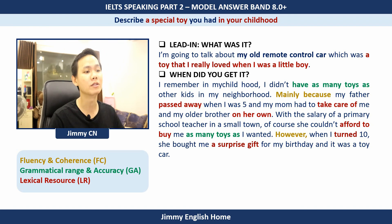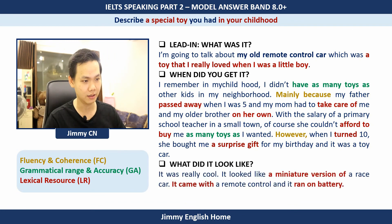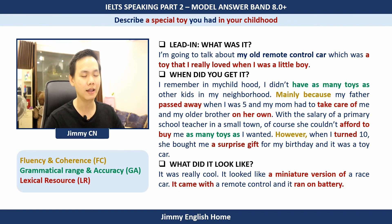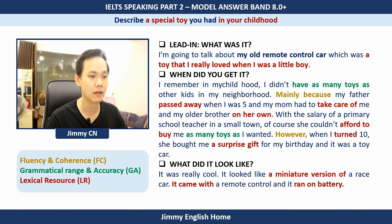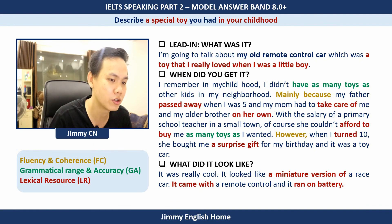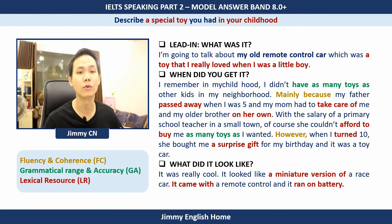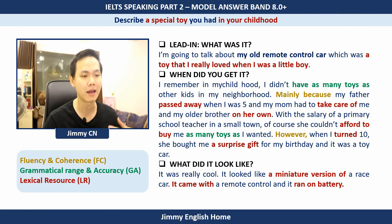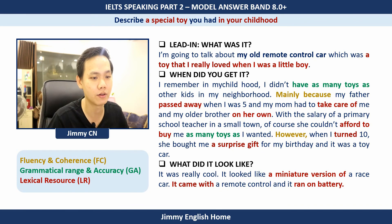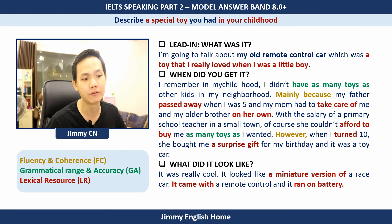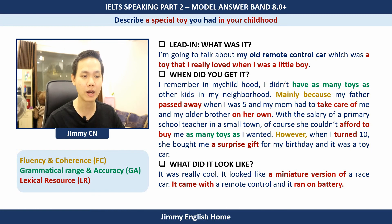For 'What did it look like': 'It was really cool. It looked like a miniature version of a race car. It came with a remote control and it ran on battery.' 'A miniature version of something' means a small-scale replica of that thing. Note the pronunciation: 'miniature,' not 'miniature.' 'It came with a remote control' means it was included together with a remote control. 'It ran on battery' means it was powered by batteries.